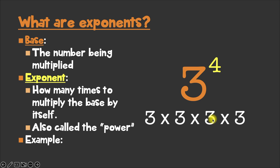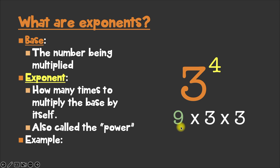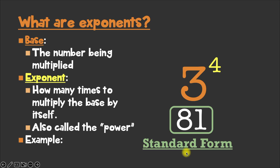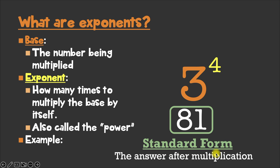Now working this out is a little bit trickier, and sometimes students say, well where do I start? It doesn't matter where you start, as long as you multiply two numbers at a time. I like to start at the left, but it's completely up to you. So first we've got 3 times 3, which gives us 9. Then we've got 9 times 3, which gives us 27. And finally, we've got 27 times 3, which gives us 81. Therefore, our final answer in standard form is 81. And again, standard form is just telling us the answer after we multiply our numbers out.